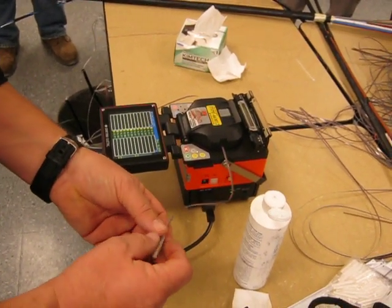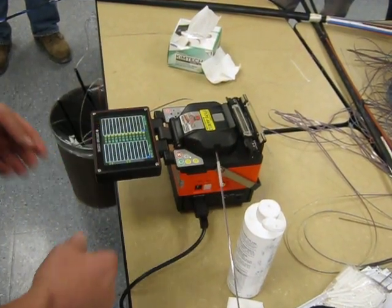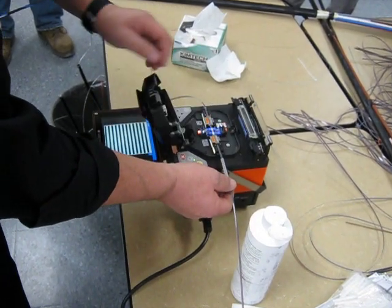We're kind of cheating with heat shrinks because if you don't put this on before you splice it, you've got to break it because it's disappearing into a cable somewhere.